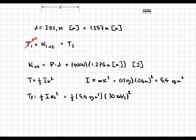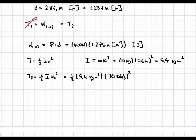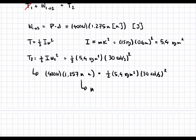We now have an equation in one unknown, n. Putting everything together: 400 × 1.257n = one-half × 5.4 × 30², and solving for n gives us n equals 4.83 revolutions. This is our final answer.